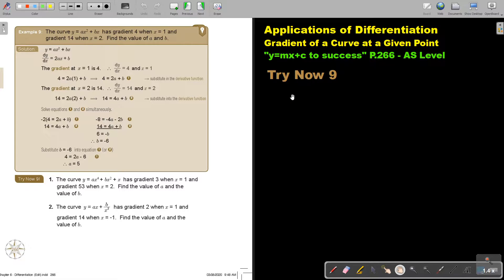Let's look at another example. The curve, this is the function, has these two unknown variables, actually constants that we are looking for, has gradient 4 when X is 1 and gradient 14 when X is 2. Find the value of A and B. So now it's almost like the reverse. They give you the gradient and the X coordinate and then you must find the two constant values A and B.